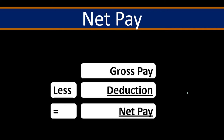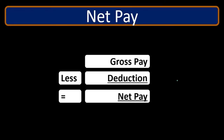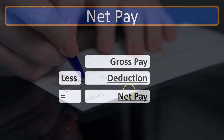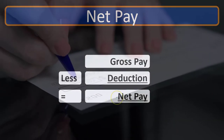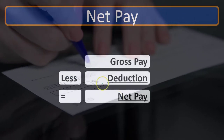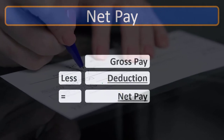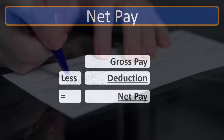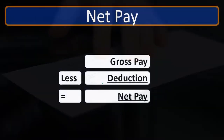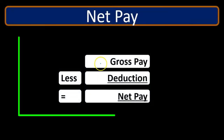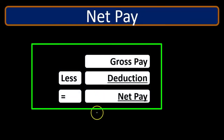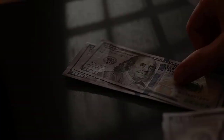Whenever we see our paycheck, the actual check we receive will be the net pay. If we look at the pay stub, we can go through the calculations and see what is included in the deductions to get from gross pay minus deductions to the net pay.